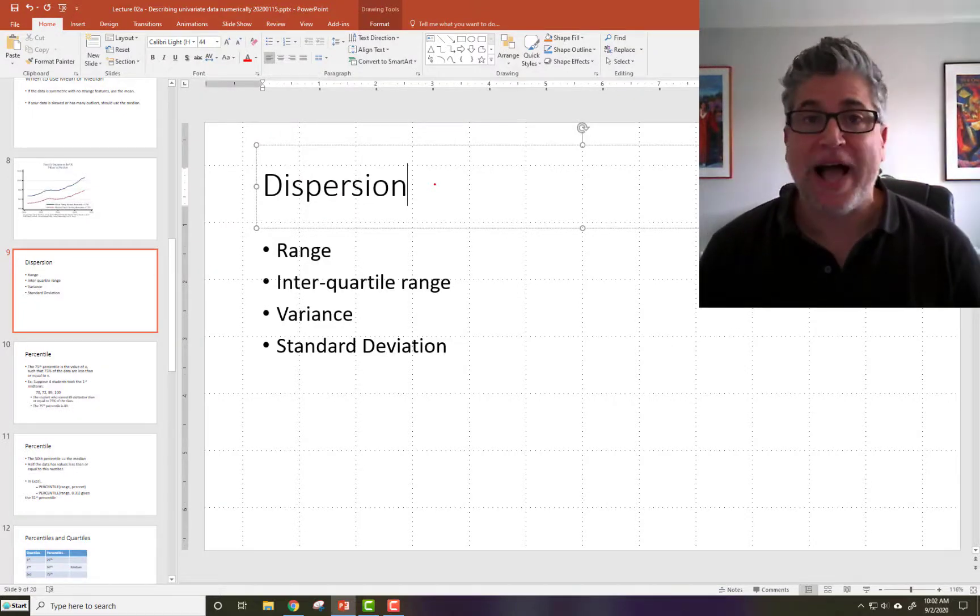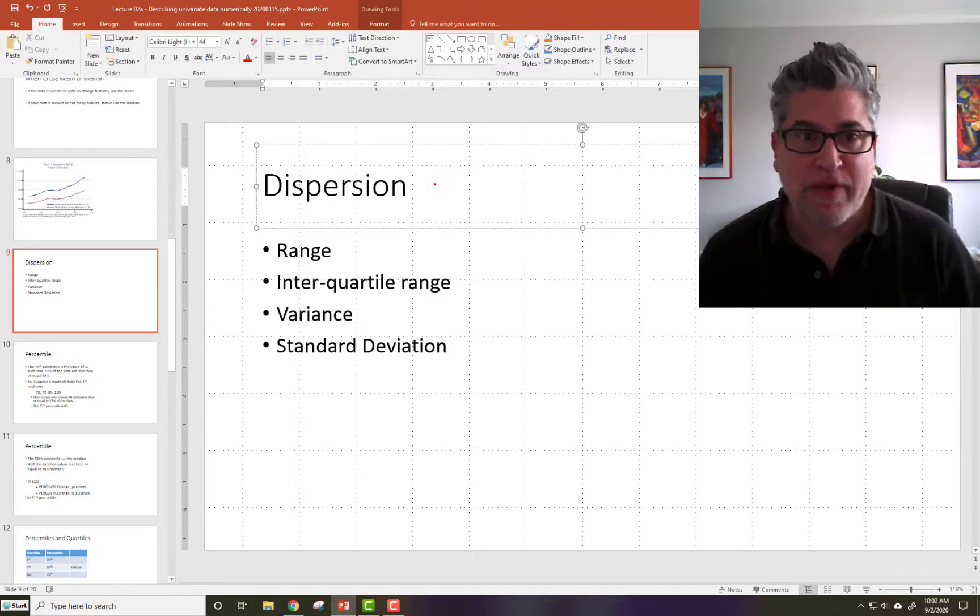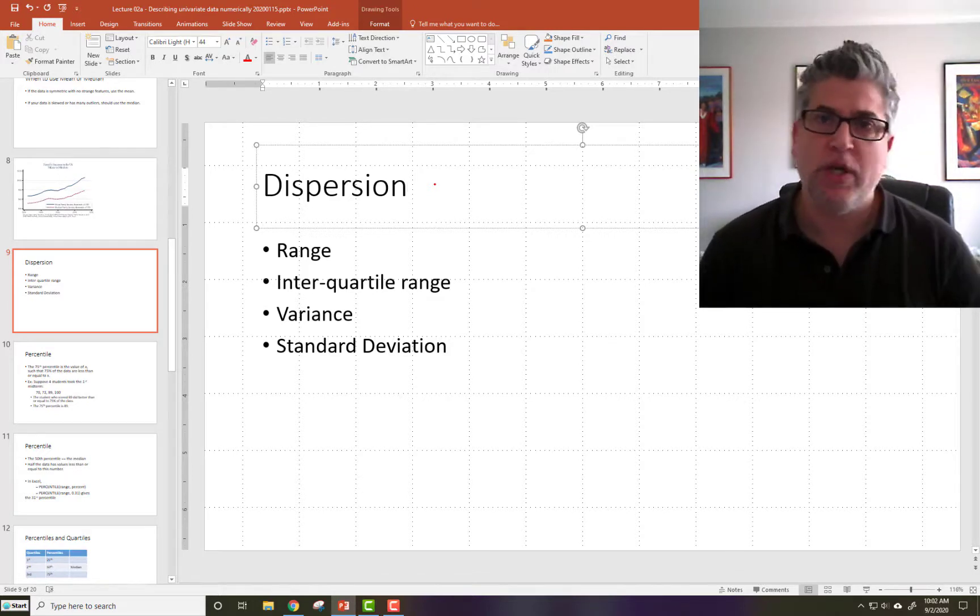The second major class of summary statistics are measures of dispersion. This is like measures of spread. Do you have high values, low values?